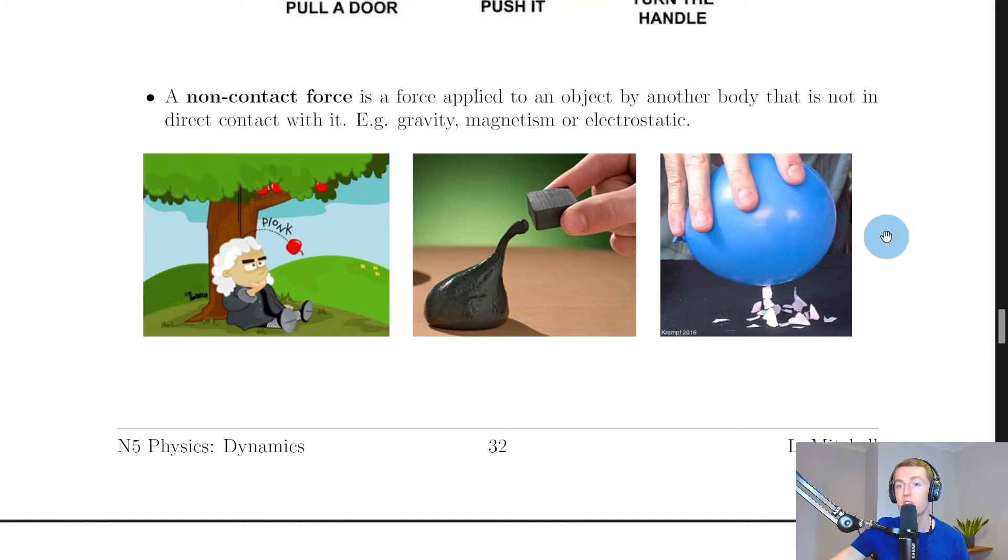And lastly, we have electrostatic forces which you might have seen before. Demonstrations of this include things like rubbing a balloon on your jumper or your hair, and then making your hair stand up. Or in this case, picking up little bits of paper with the charged surface of the balloon. You could also deflect a stream of water using the charge in the balloon or a charged rod, or make the balloon itself stick to a wall, or use a Van de Graaff generator.